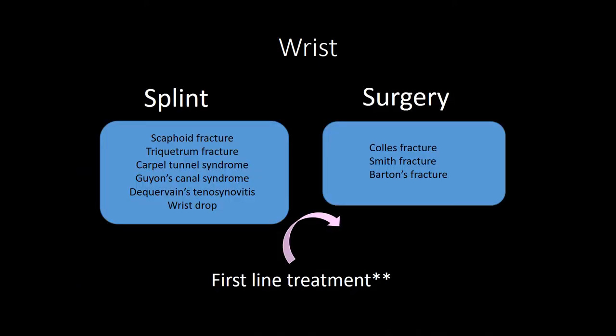Colles' fracture is a distal radius fracture with dorsal displacement, seen in patients 50 and above after a fall on an outstretched hand. Assess median nerve function; treatment is closed reduction. Smith fracture is also a distal radius fracture but with volar displacement — treatment is also closed reduction. Barton's fracture is a distal radius fracture with dislocation of the radiocarpal joint, the most common fracture-dislocation of the wrist, and it requires external fixation and surgery.